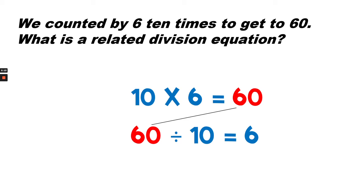So a division equation that is related would put the biggest number first. So the product is now the first number in the division equation. 60 divided by the number of groups, which is 10, equals the number in each group, 6.